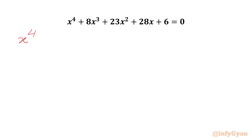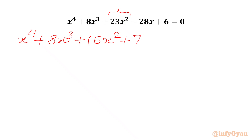x power 4, then we have 8x cubed term, then we have 23x squared — which we are going to split into 16x squared and 7x squared, since 16 plus 7 is 23. Then we will write the remaining terms: 28x plus 6 equal to 0.